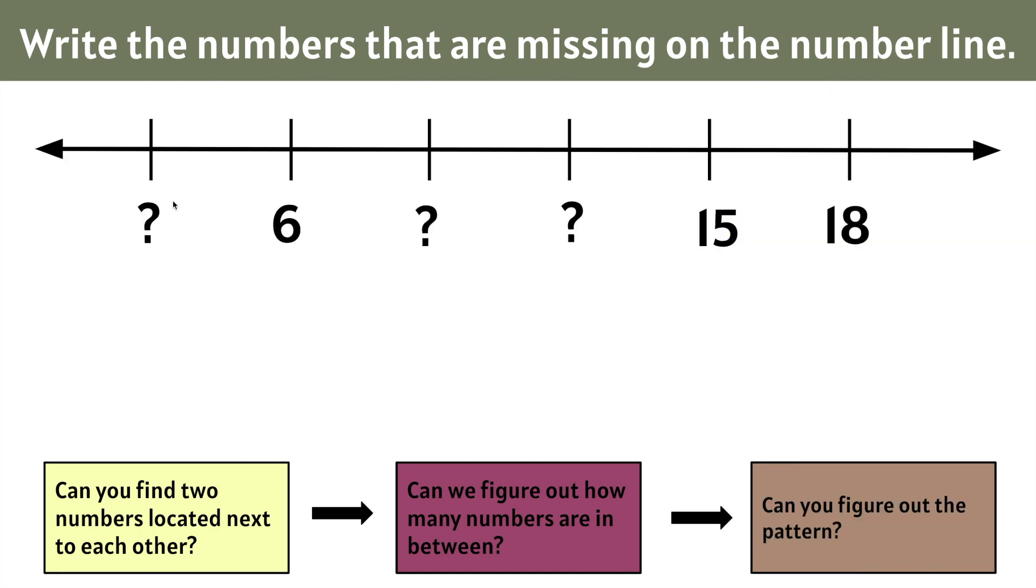Let's write the numbers that are missing on this number line. We have this missing number, this one, and this one. Let's locate two numbers that are right next to each other on this number line. We notice that the 15 and the 18 are right next to each other. Let's think, how far apart is 15 from 18? Let's put 15 on our heads and count up to 18.